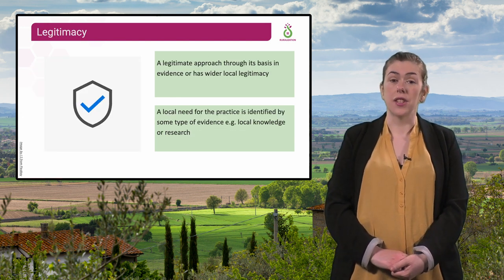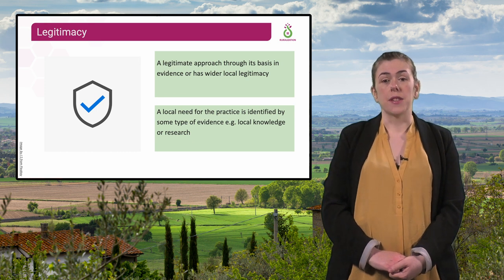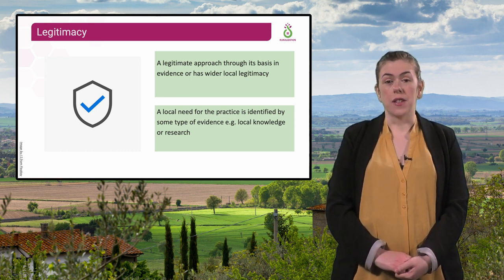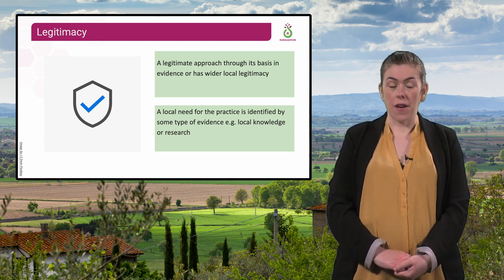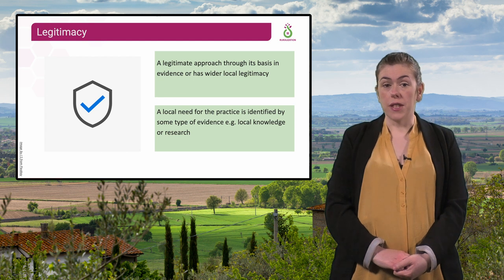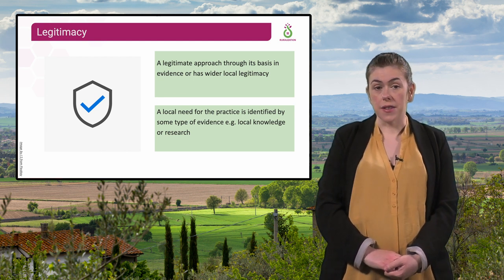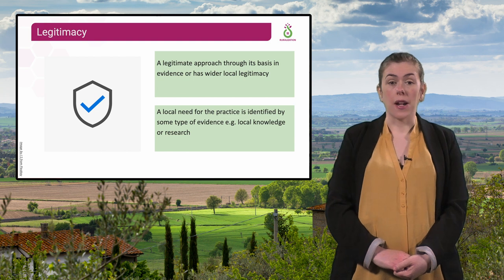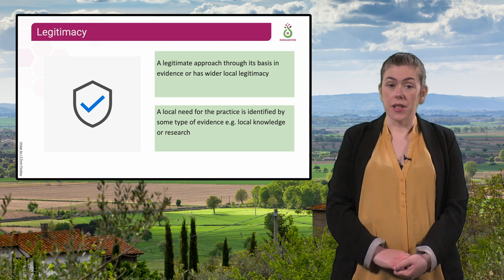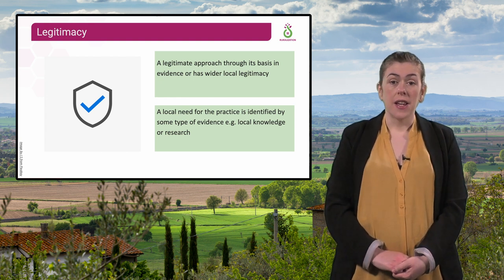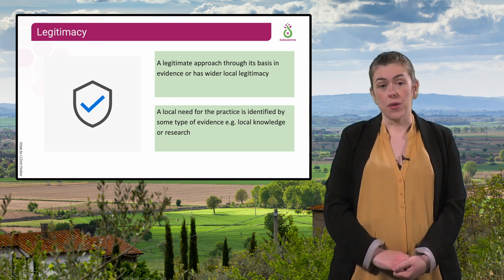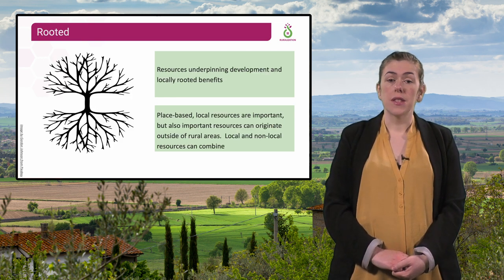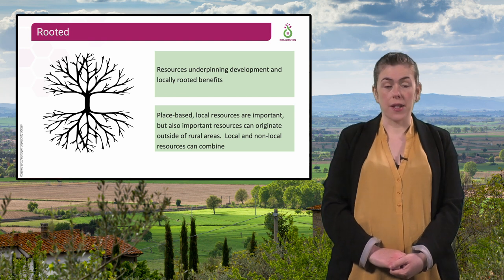The second principle is legitimacy. This taps into the idea that a practice would be viewed as legitimate if there is an identified need for it, provided by some type of evidence — either formal research evidence or strong anecdotal evidence — or simply that the practice has local relevance, making it legitimate. For example, the decline issue the practice addresses is identified locally by a stakeholder organisation or is a grassroots response to local needs.